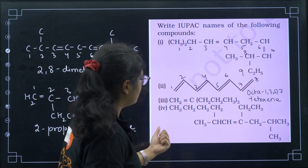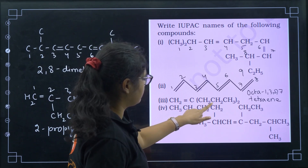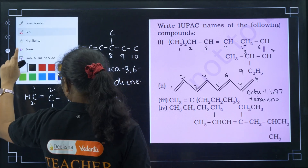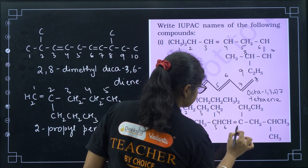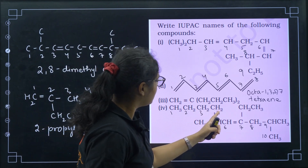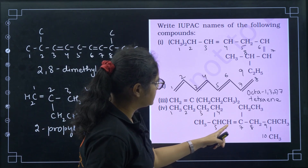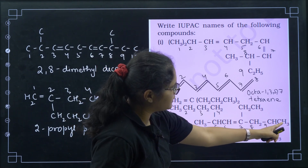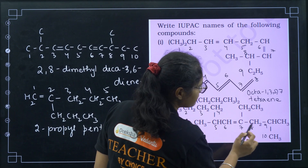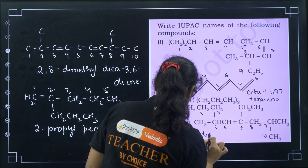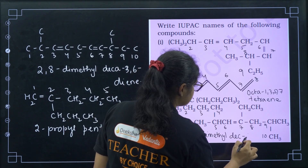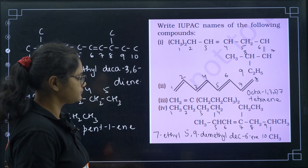The fourth structure looks more complicated. Numbering 1 through 10: on the fifth carbon there is a methyl group, on the seventh carbon there is an ethyl group, and on the ninth carbon there is another methyl group. Double bond is at position 6. In alphabetical order: 7-ethyl-5,9-dimethyldec-1,5... with the double bond at position 6 — giving 7-ethyl-5,9-dimethyldec-6-ene.